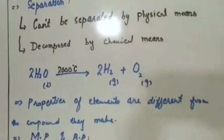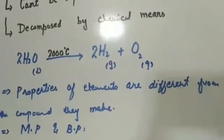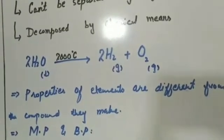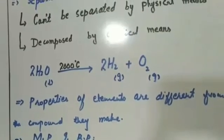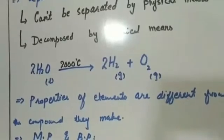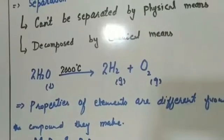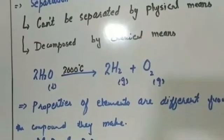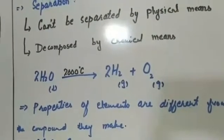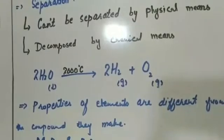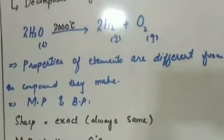The next important property of compounds is that the properties of the elements are different from the compounds they form. For example, water is made up of hydrogen and oxygen. Hydrogen is a gas and oxygen is a gas — both gaseous substances with completely different properties — yet when they combine together they form liquid water, which has completely different properties. The individual properties of hydrogen and oxygen are lost in the formation of the water molecule.